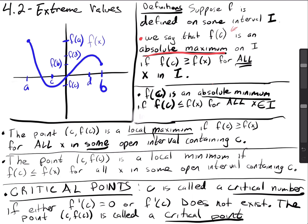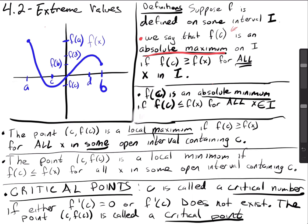To translate it, the absolute maximum is the absolute largest value of the function. If you look at our sample graph on the left side, what's the absolute maximum? It's at point a. The absolute maximum is f of a — it's the y value. Where is it located? At x equals a. So make sure you make that distinction: the maximum or minimum is the value of the function, the y value. And when you want to know where it is, that's the x value.